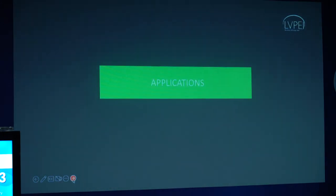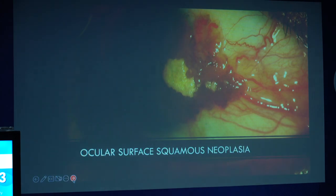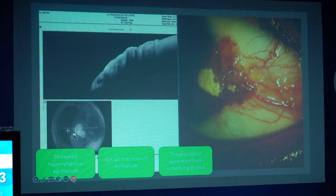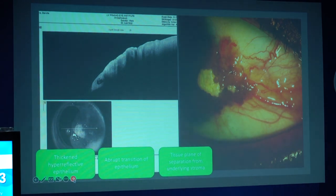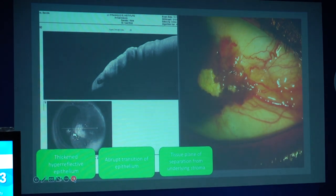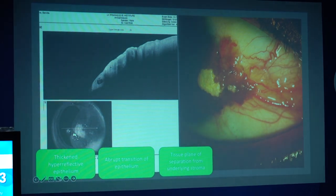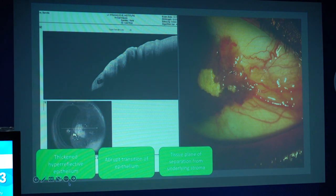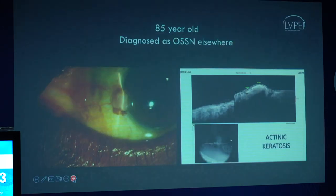The first and most important clinical application is ocular surface squamous neoplasia and differentiation from other surface tumors. The three primary points to be noted on any OCT are the thickened hyperreflective epithelium, the abrupt transition of the epithelium over the lesion from the adjacent corneal epithelium, and the tissue plane of separation from the underlying stroma.